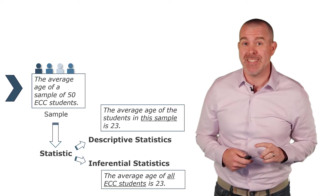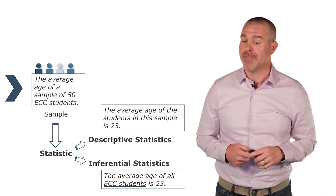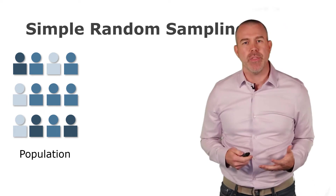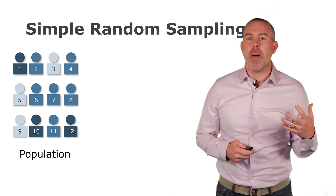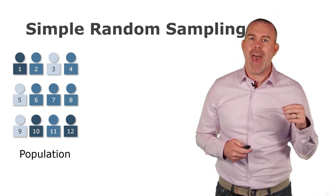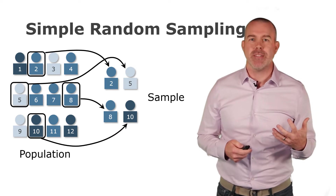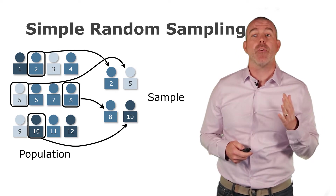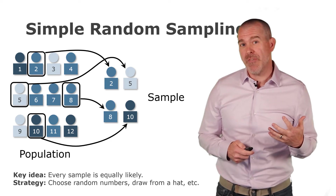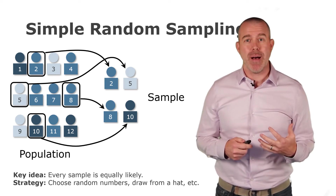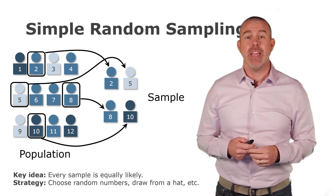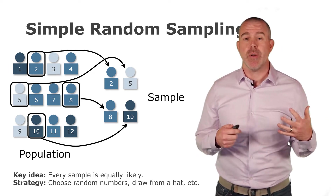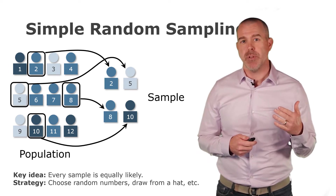Incidentally, the average age of ECC students is actually around 28. The first type of random sampling is called simple random sampling. We have some population — represented here with 12 figures — and we number them and use a random number generator, draw names from a hat, or use ping pong balls to randomly select a sample. The key is that each of all possible samples is equally likely. You use a computer to generate pseudo-random numbers, or draw names from a hat.